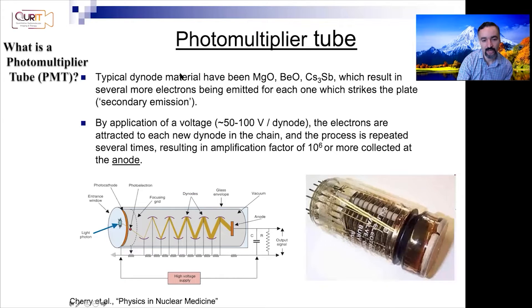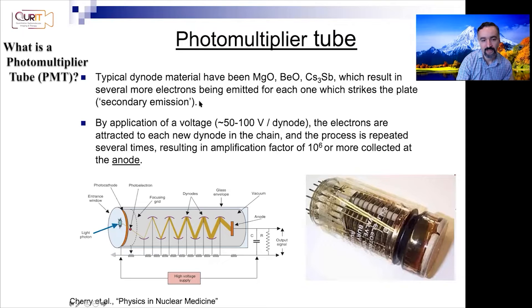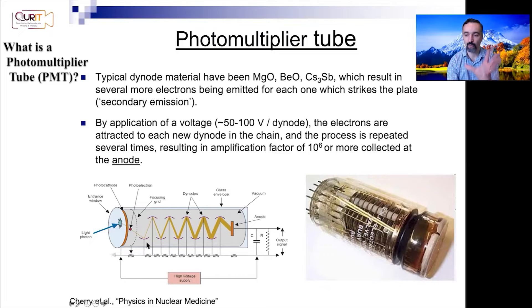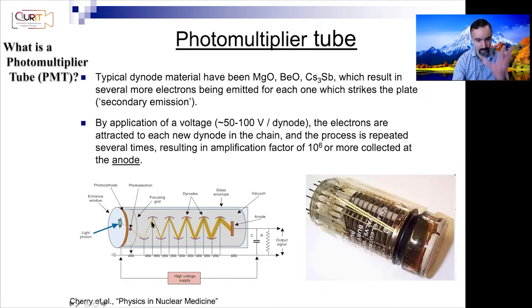High voltage supplies typically run from 500 volts to even 1500 volts. The dynode material itself is coated with things like magnesium oxide. This enables a phenomenon called secondary emission: when these metal plates are bombarded by electrons, secondary emission allows them to emit many more electrons, amplifying the number of electrons at each stage.